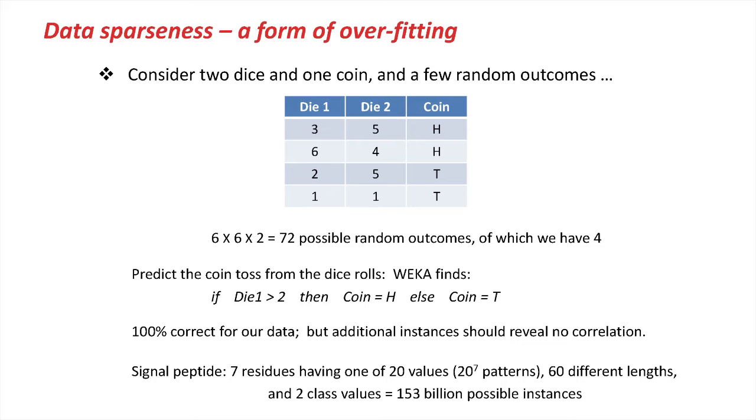So this is the problem of overfitting due to data sparseness. And this is a real problem with our signal peptide because we've recorded seven different residues around the cleavage site. So each of them can be one of 20 residues. So that's 20 to the seven possible patterns. We've got the position. There's about 60 different integers there. The two class values. That's 153 billion possible instances of which we have 1400 positive ones and an equal number of negative ones, a tiny fraction. So that's data sparseness.